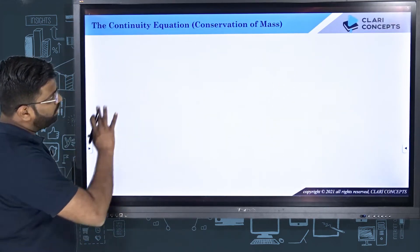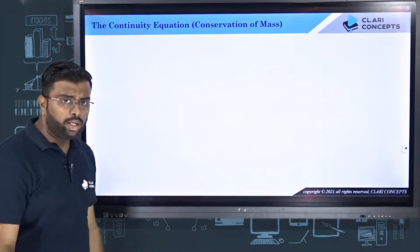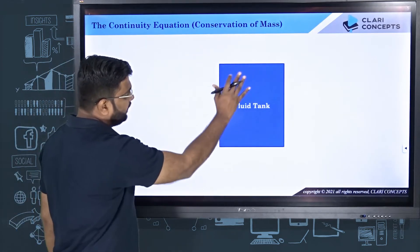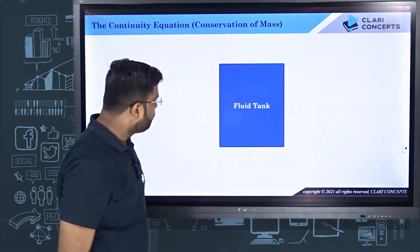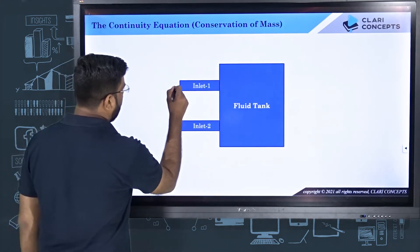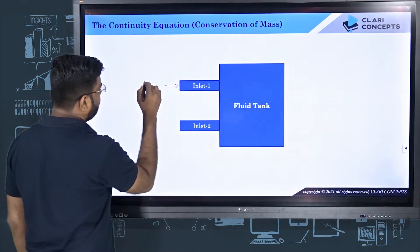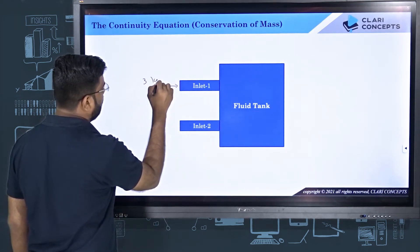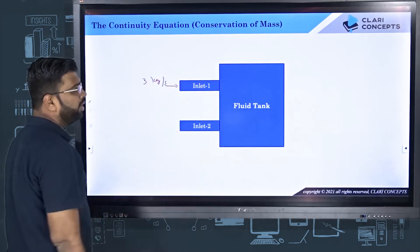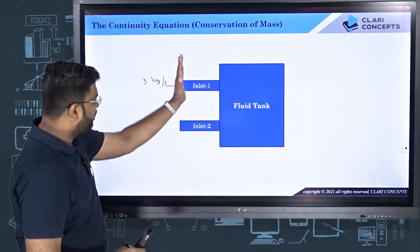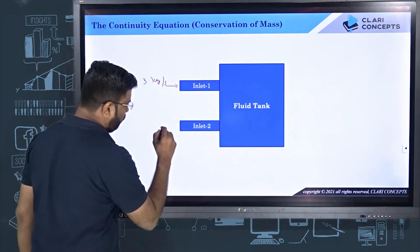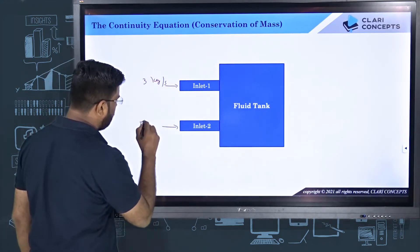Before I move on to this continuity and conservation of mass equation, I would like to ask you one question. Let us say that you have a fluid tank — there is a tank of fluid — and the tank has two inlets. From one inlet, I am putting in mass of three kilograms every second, so the mass flow rate through this inlet is three kg per second. From another section, the flow rate is five kg per second.